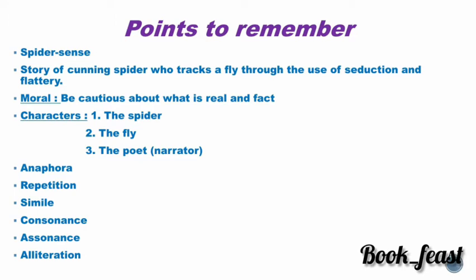The moral is: be cautious about what is real and what is fact. Do not blindly believe someone if they say something surprising about you. Take time to think whether it is real or just flattery. The characters are the spider, the fly, and the poet. The last stanza is a narration where the poet narrates the gist and moral of the poem, while the earlier stanzas contain the conversation between the spider and the fly.